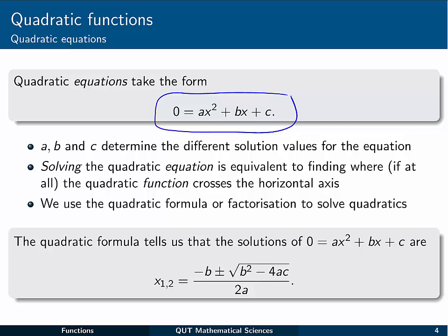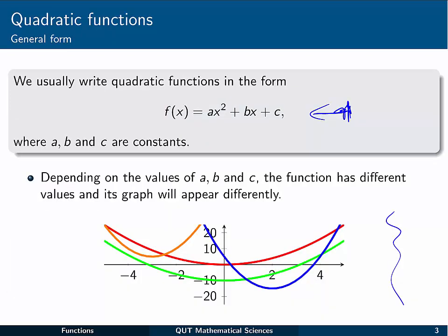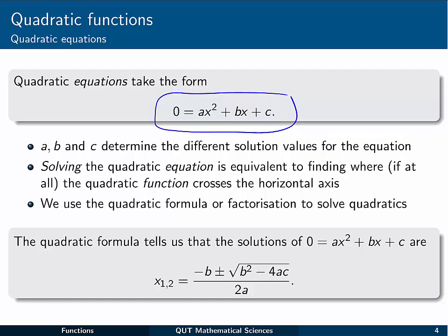Solving the quadratic equation is equivalent to finding where the corresponding quadratic function crosses the horizontal axis. So remember back here with our examples, on the blue curve for example, it crosses the axis at two points. The red curve at just one, the green at two points, and the orange curve strangely doesn't cross the axis at all. So depending on our a, b and c values, our quadratic function will cross the axis a different number of times.